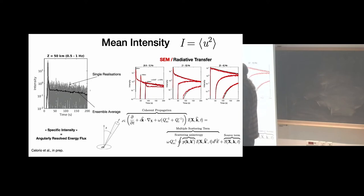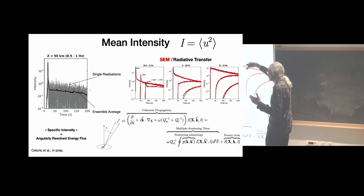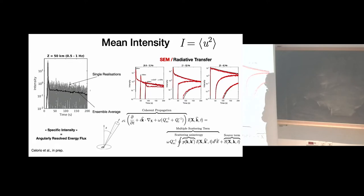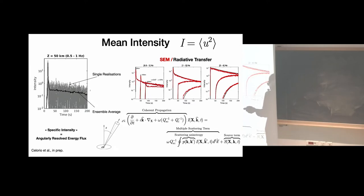These transport models are incredibly good for modeling observations with a very limited number of assumptions. I should speed up and show the InSight results. One important point: to separate scattering and absorption, you use the fact that the decay near the ballistic arrival gives you the sum of scattering and absorption, while the coda decay gives you only the absorption. With two independent measurements you can separate the two.